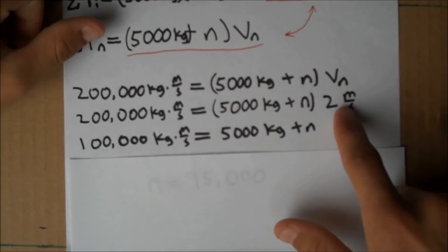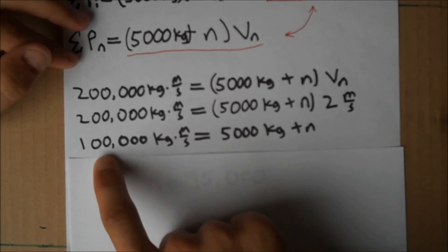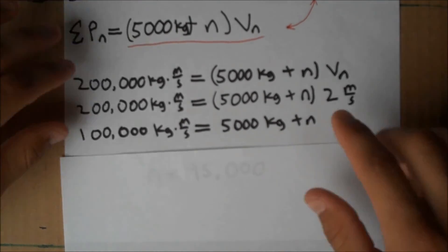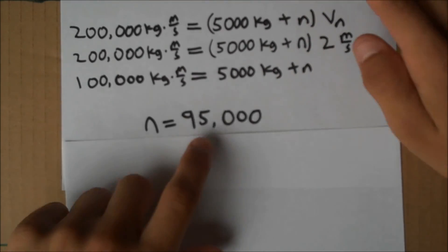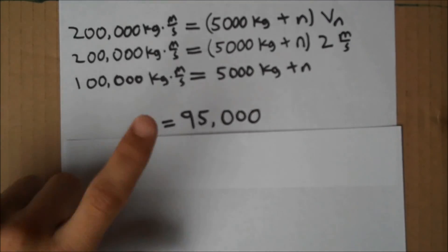So, now let's solve. Let's divide off the 2, giving us 100,000 on this side, leaving us with 5,000 plus n on this side. Then subtract, n equals 95,000 once we've subtracted 5,000 from 100,000.